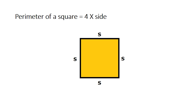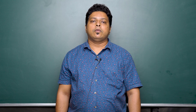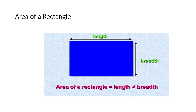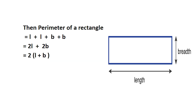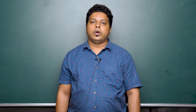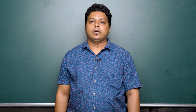Therefore area of a square is side squared. Perimeter of a square is equal to 4 into side. For a rectangle, it is a four-sided figure made up of two lengths and two breadths. Let l and b denote the length and breadth respectively. Area of a rectangle is length into breadth, and the perimeter of the rectangle is l + l + b + b, which gives us 2l + 2b, or 2 into bracket length plus breadth.